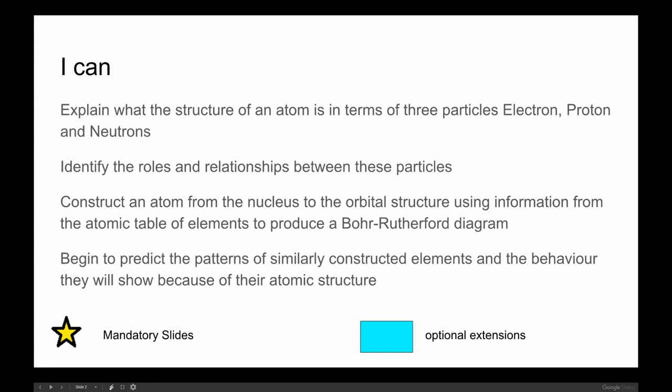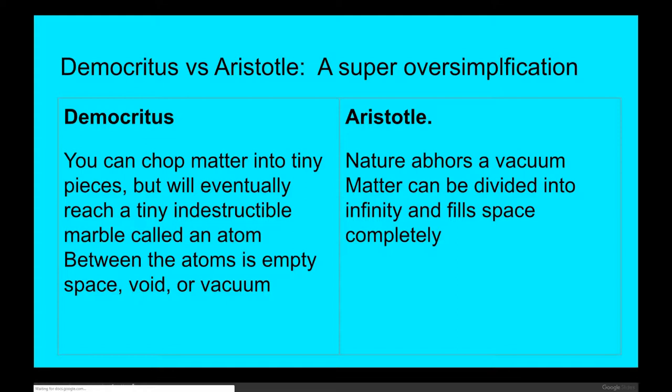This portion of the lesson is strictly background information of which you only need to know what an electron, proton, and neutron are and how they are laid out inside the atom. The theory of the atom is very ancient. It seems to originate somewhere around the time of Democritus and Aristotle, though you can throw in another dozen names you've never heard of. This is a vast oversimplification of their two very grand theories that are dimly science by today's standard.